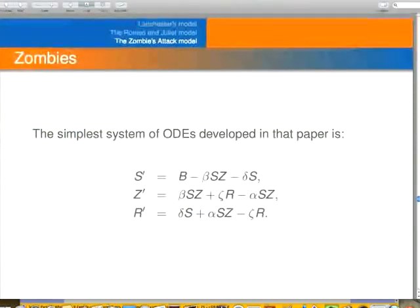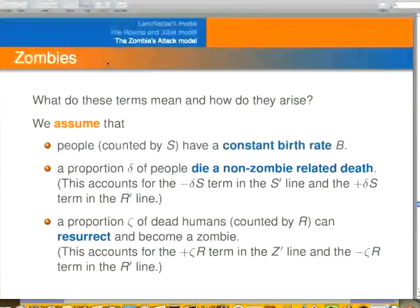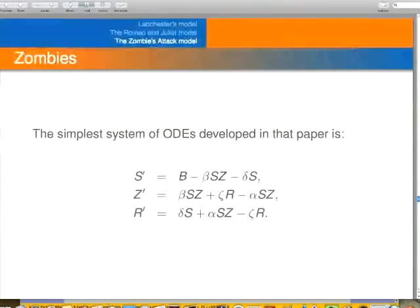We have this differential equation that describes how these populations change. And here's how they change. I'll just explain each of those terms. First, we're going to assume that people have a constant birth rate B. That's this term right here.